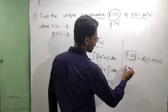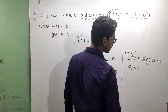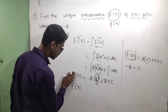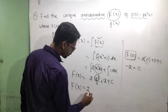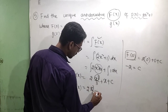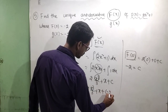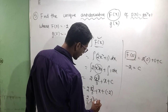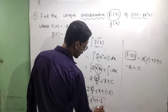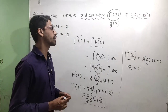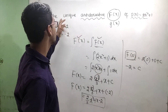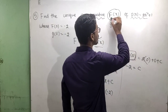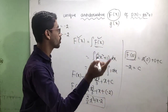F of zero equals minus two, so minus two equals C. Therefore C equals minus two. So F of x equals two into x cube by three plus x plus minus two, which gives two by three into x cube plus x minus two.